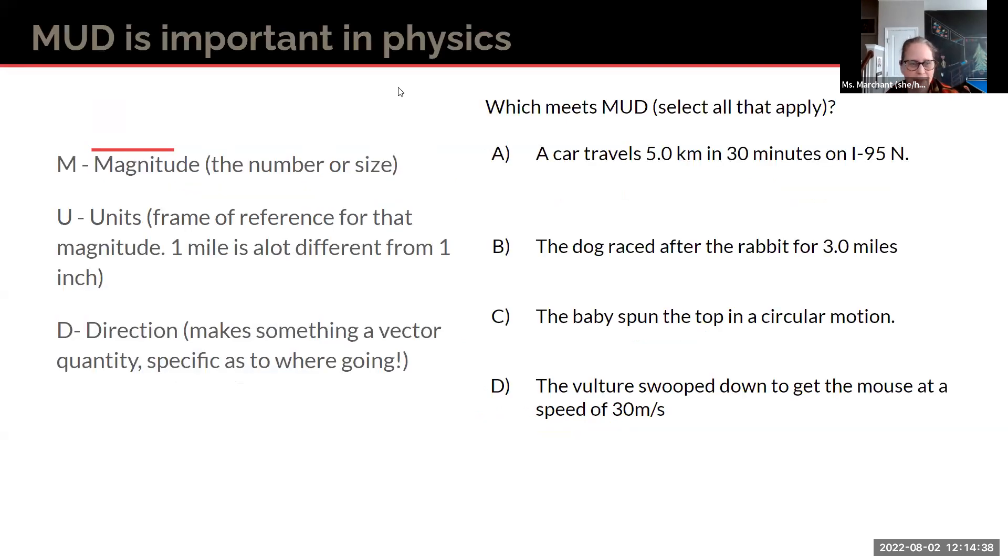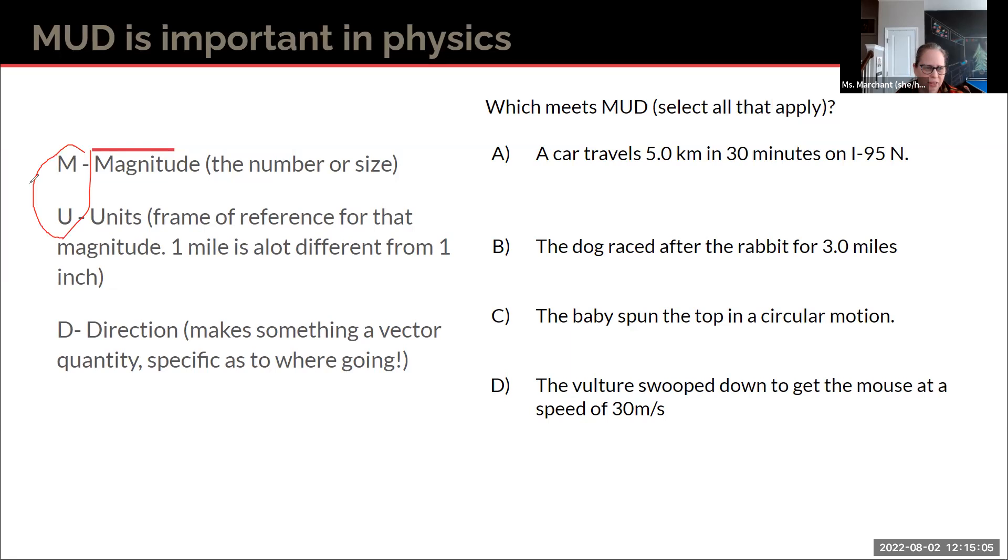And how can we put it? We have lots of little key terms there. So magnitude is that number. And scalars and vectors both have magnitudes. Units. That gives us a frame of reference. 5 kilometers is way different than 5 inches. So you need those units to let you know the scale. So scalars and vectors use units. So a scalar is going to have an M and a U. But a vector has the full MUD, magnitude, unit, and direction.